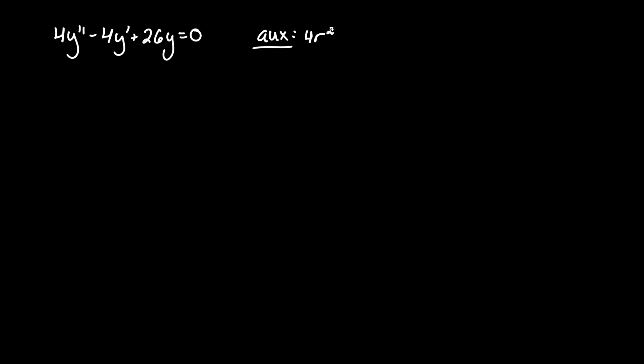So 4y double prime is 4r squared, 2 for 2 primes, minus 4y prime, so just 4r, plus 26y, since there's no primes, there's no r, equals 0.